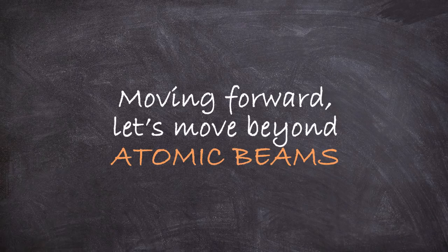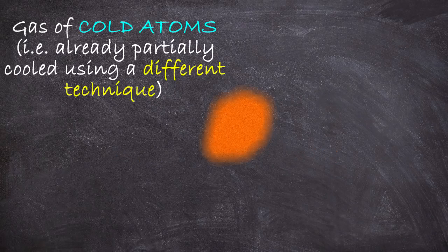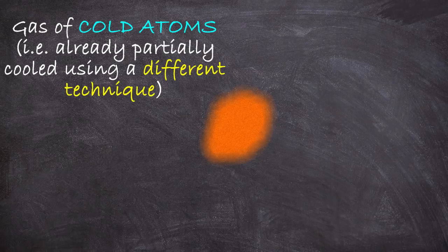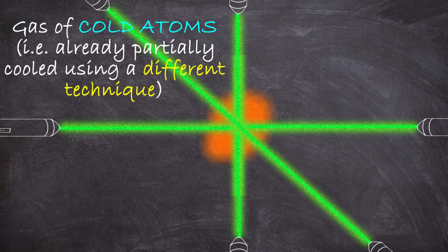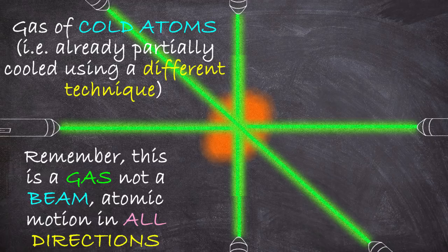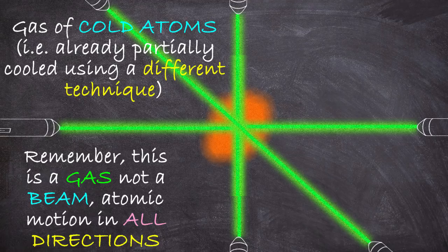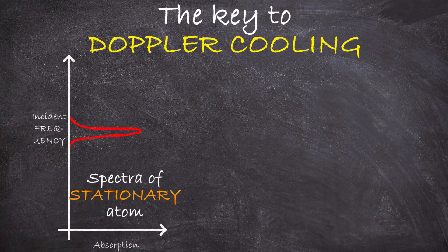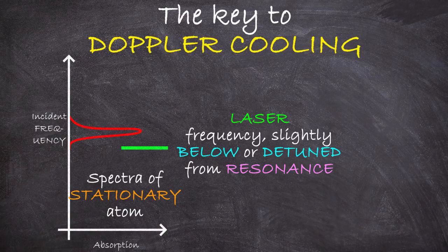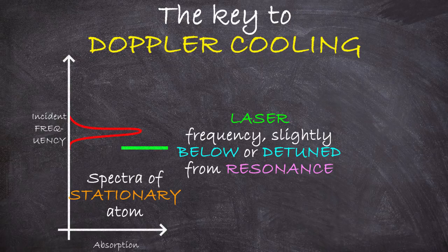To see how, forget about our typical setup of atomic beams, and consider a gas of very cold atoms that have been pre-cooled by some other technique, and that is pinned between six lasers, two opposing lasers for each axis. Now, remember, we're talking about a gas now, and not a beam. So the atoms aren't all moving in the same direction, and the direction of their motion is random. And the trick is that we take our lasers and get their frequency to one that is just below a resonance of the system. We so-called detune the laser to an off-resonant lower frequency.